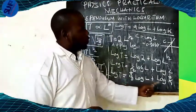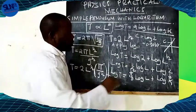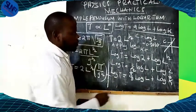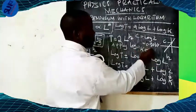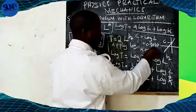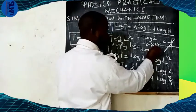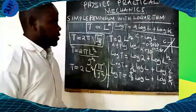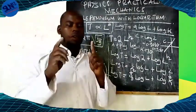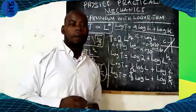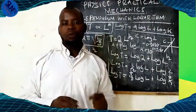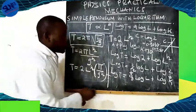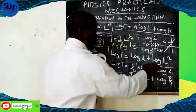From the graph, the y-intercept C equals log 2, which equals 0.3010. Therefore, K equals 10 to the power 0.3010, which means K equals 10 to the power of log 2, confirming K equals 2.